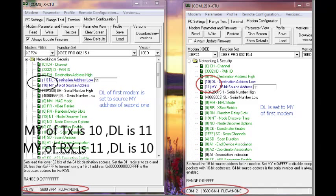Receive side XB MY is 11 and DL is 10. That is, source address and destination address should be reverse.